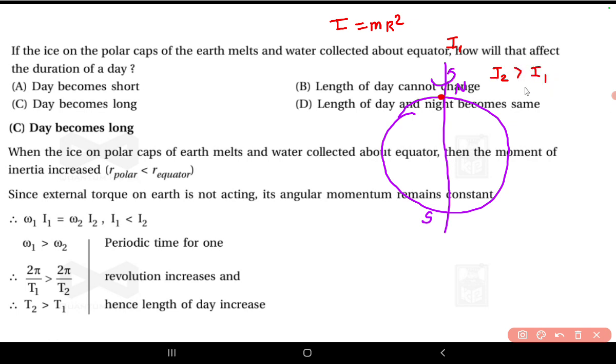Here, no external forces are acting, so the angular momentum remains conserved. The torque will be equal to zero. For conservation of angular momentum, we know that I₁ω₁ equals I₂ω₂. So ω₂ will be equal to I₁ω₁ by I₂.